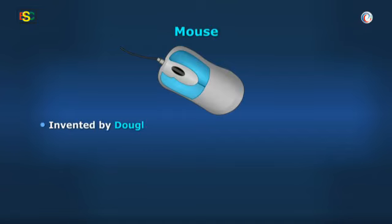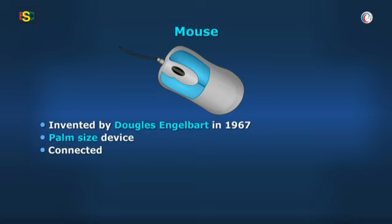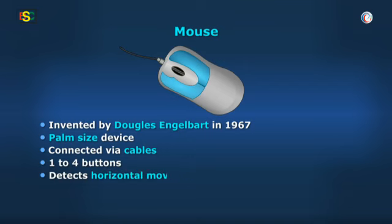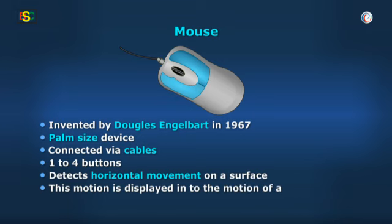Yes, Vidya. The mouse was invented by Douglas Engelbart in 1967. It is a palm-sized device and usually connected to the computer via cables. It can have one to four buttons. It is a device that detects horizontal movement on a surface. This motion is translated into the motion of a pointer on the screen.